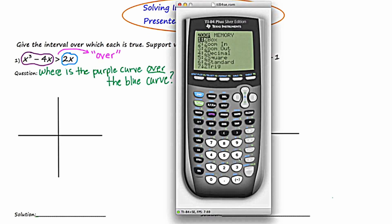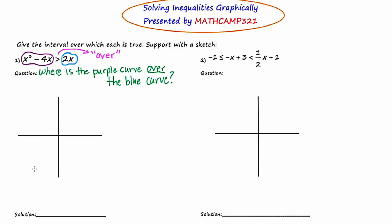I'm going to start with zoom 6, a standard viewing window, and see if that gives me a good window. There's the x cubed curve and the 2x curve. I'm going to try to reproduce what I'm seeing on the graph using the appropriate colors — the purple is the wiggly-looking one and the blue is the slanted line that goes through it. When you're doing the lab, you'll have the calculator next to your sheet of paper. The purple one is the x cubed and the line is the blue one.